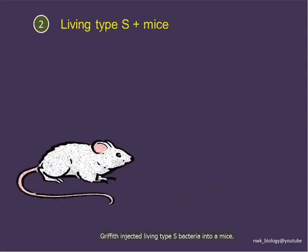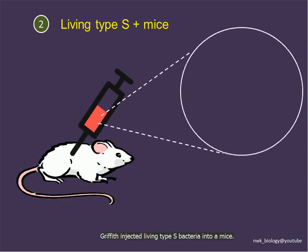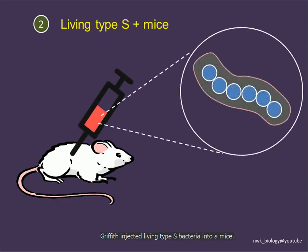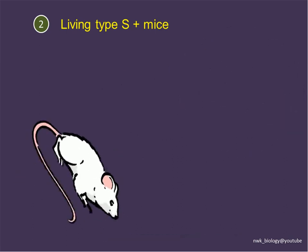In the second experiment, Griffith injected living type S bacteria into the mice. Living type S bacteria is virulent, and it killed the mice.